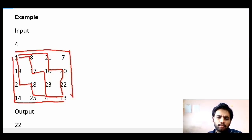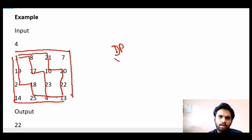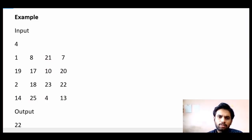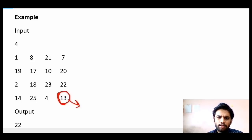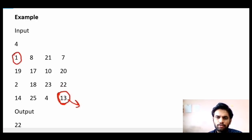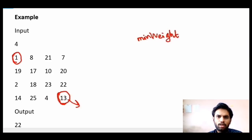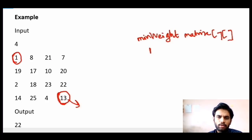Obviously the issue with exploring all paths is time complexity, as we would have to backtrack through every path. The better solution is dynamic programming. What is asked is the minimum weight while exiting, but let us first think about finding the minimum weight at each position in the matrix. We will write these values down in a separate matrix called the minimum weight matrix.